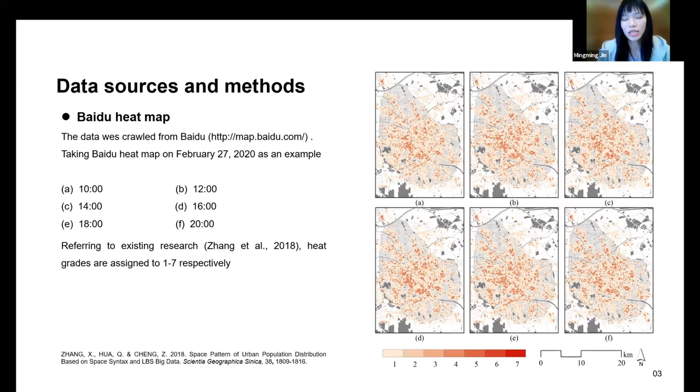Let's move to the data and model of our research. Baidu heatmap is one of the most typical representatives of population distribution. It is based on LBS platform, location-based service platform, mobile phone user location data, and it can calculate the population density of different locations in real time.